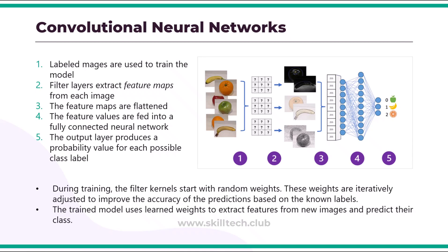During the training process for a CNN, filter kernels are initially defined using randomly generated weight values. Then, as the training process progresses, the model predictions are evaluated against known label values, and the filter weights are adjusted to improve accuracy. Eventually, the trained fruit image classification model uses the filter weights that best extract features to help identify different kinds of fruits. This is the process used whenever you are trying to do classification of any kind of images.